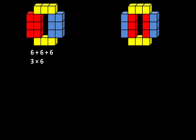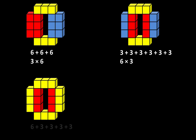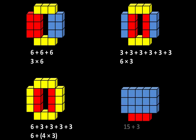Let's take a second look at how the structures were broken apart. Almost every time we find there is more than one way to describe what we see. The first structure can be described as 6 plus 6 plus 6, or as 3 groups of 6. The second structure can be described as 3 plus 3 plus 3 plus 3 plus 3 plus 3, or as 6 groups of 3. The third structure can be described as 6 plus 4 groups of 3, and the fourth as 15 plus 3, or 5 groups of 3 plus 3.